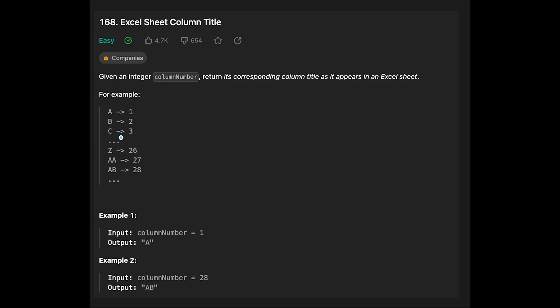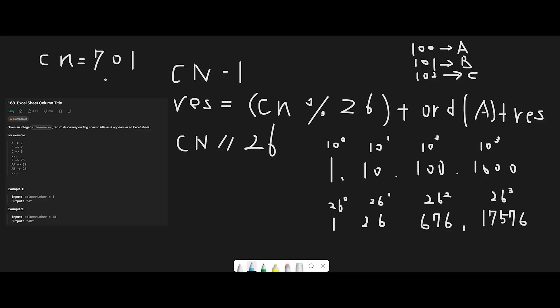After Z, the column title is AA, that is 27, and AB is 28. Okay, so let me explain with this example where column number is 701.